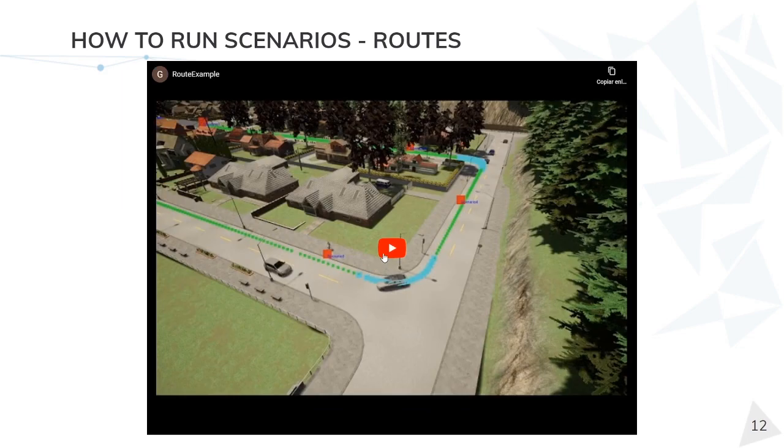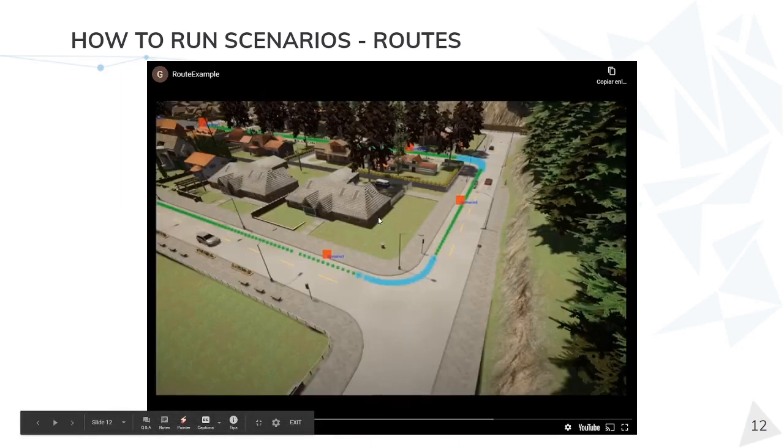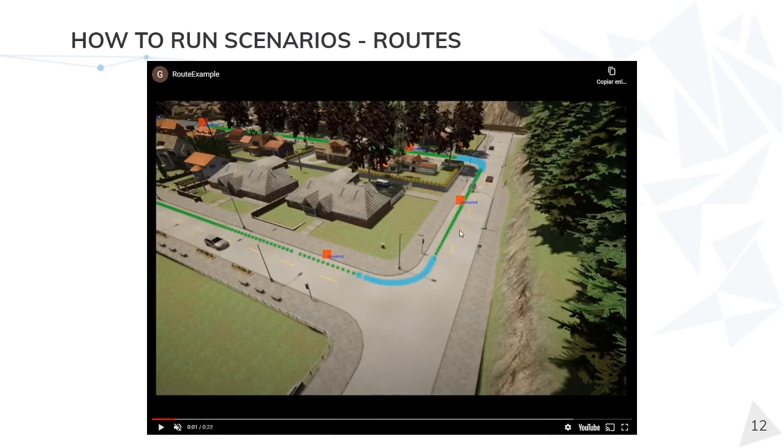Here we can see an example of a route. First of all, the debug flag has been activated, which are these points in green and light blue. Also, the red points are the trigger positions of the scenario.